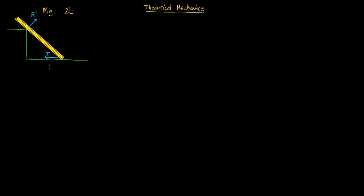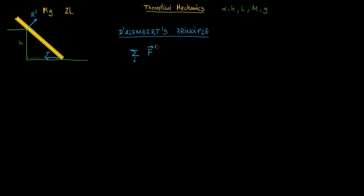Here we have a string. In terms of alpha, H — this distance — L, M, and G. This can be done by Newton's law, but let's start with D'Alembert's principle, which is the new method from the first lesson. D'Alembert's principle says that the sum of the dot products of the applied forces minus the linear momentum dot, with the virtual displacements, is equal to zero. This is a static system, so P-dot equals zero because there is no motion. We can delete P-dot. The applied forces are those that are not the binding or constraining forces.